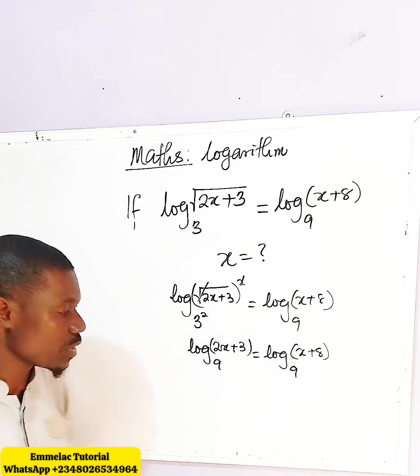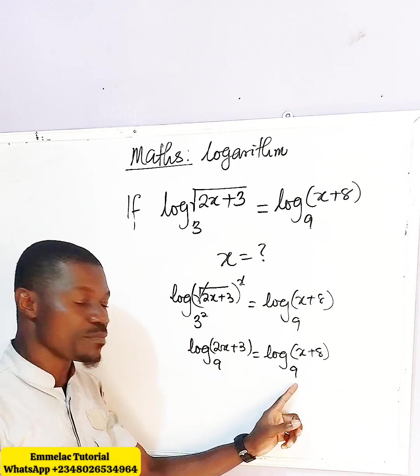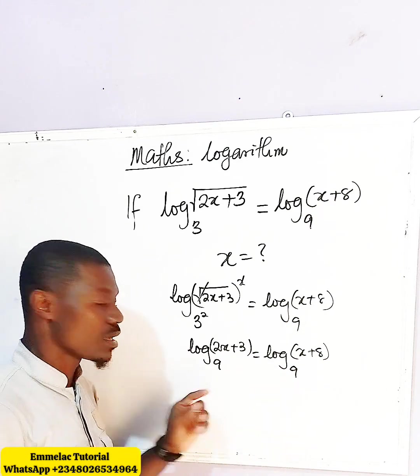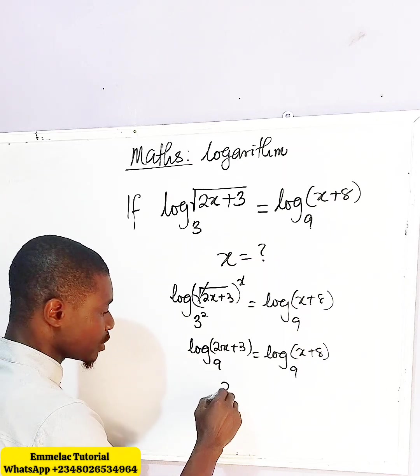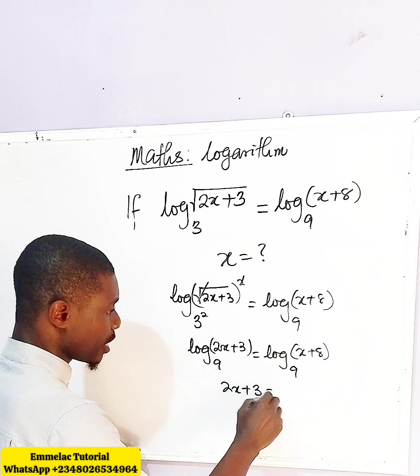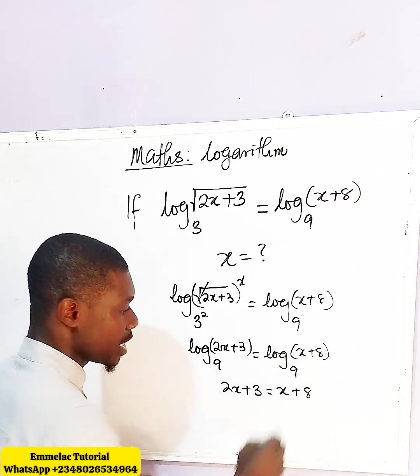At this point, since we have the same base on the left and right hand side, we can equate the arguments: 2x plus 3 equals x plus 8.